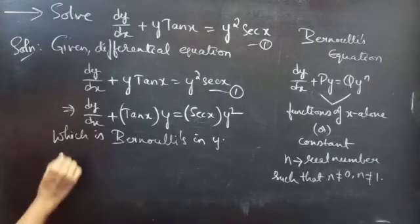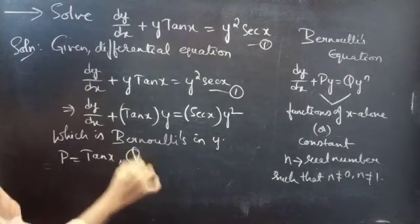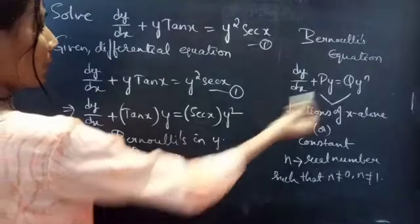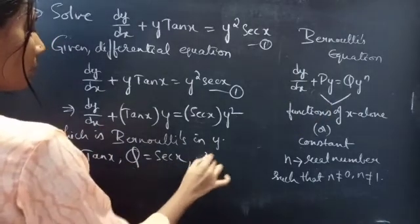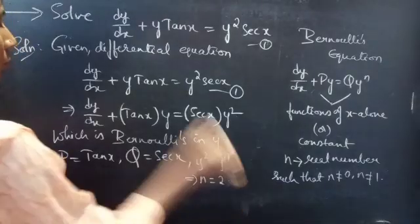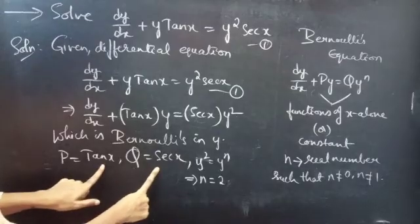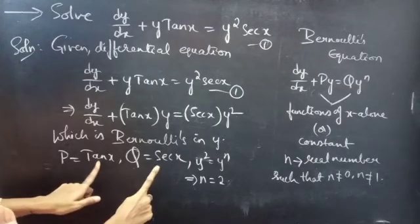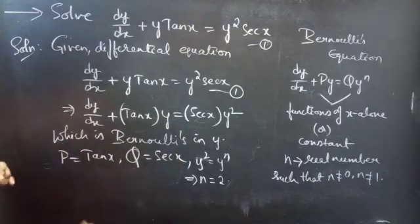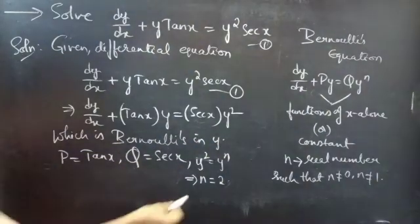By comparing these two equations, we get p equals tan x and q equals secant x. And by comparing y squared with y to the power n, we get n equals 2. So p and q are functions of x alone, and n equals 2.